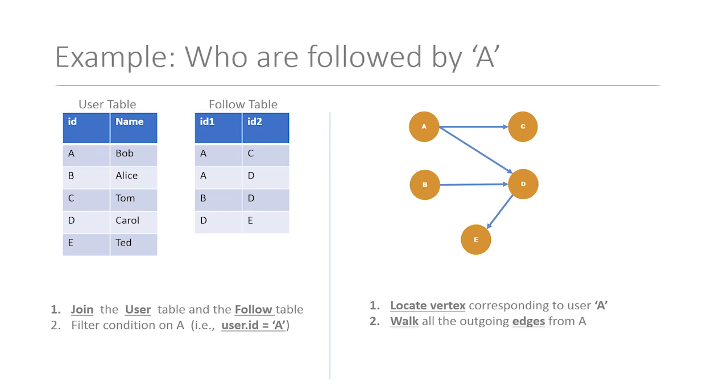Comparing costs at scale: if you have millions of users and millions of follow relationships, the relational approach requires joining two huge tables, leading to high cost. In the graph model, even if the graph is very large, you quickly identify vertex A and then walk only a specific path — a very small portion of the graph. That's where the graph model can benefit you a lot in terms of cost.